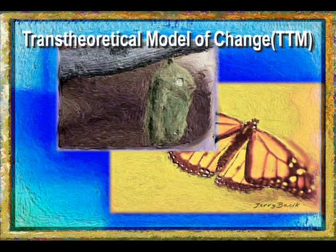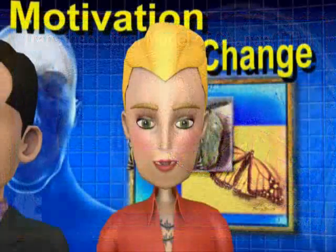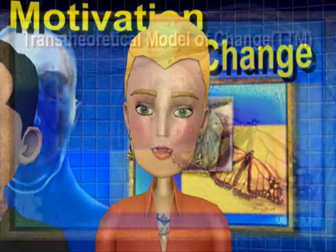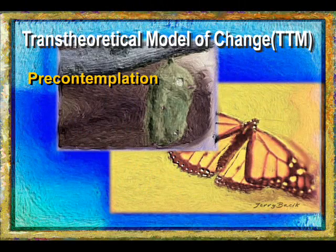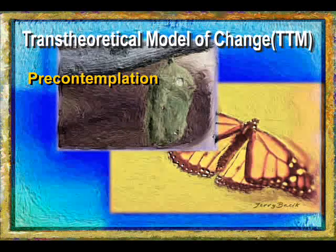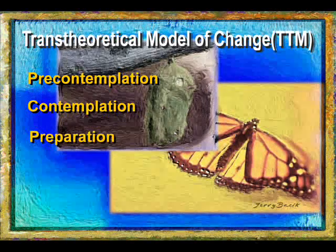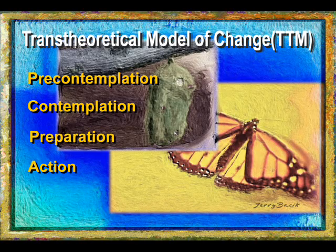One of the most widely applied and tested models of behavior change is the Trans-Theoretical Model, or TTM. TTM presumes that at any given time a person is in one of five stages of change: pre-contemplation, contemplation, preparation, action, or maintenance.